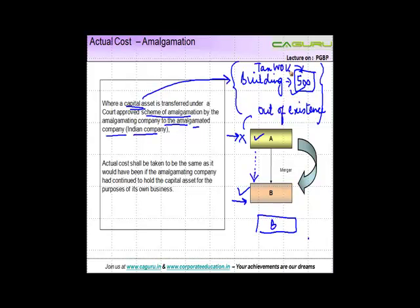company would have accounted for in its books of accounts. So if the amalgamating company, which is company A in our case, had a value of 500 in its books of accounts for this particular asset, the value for B for tax purposes shall also remain at 500. It will not increase or decrease.